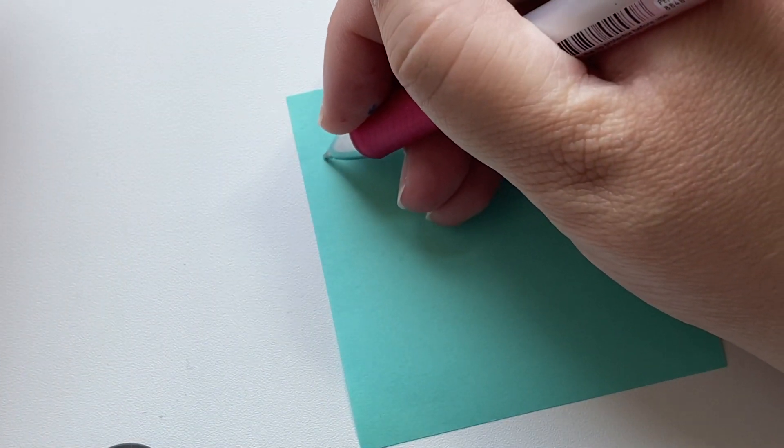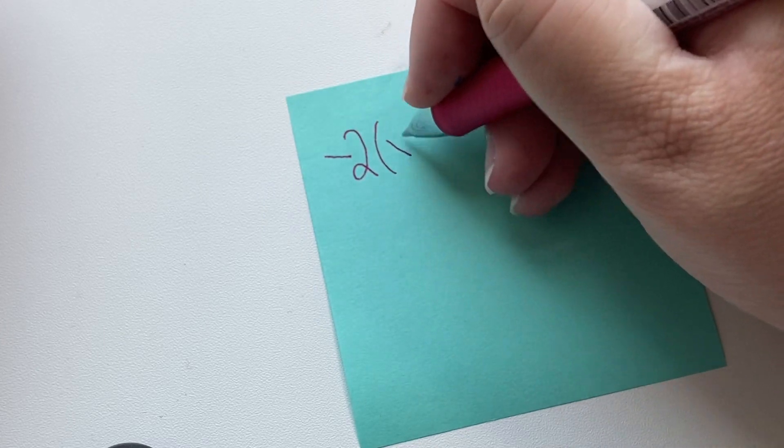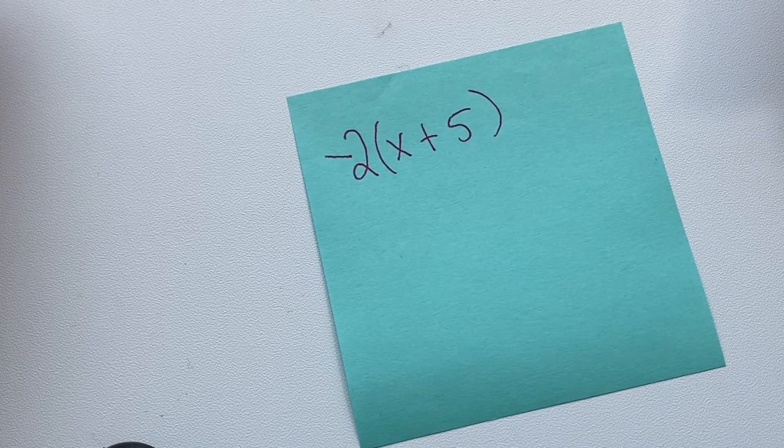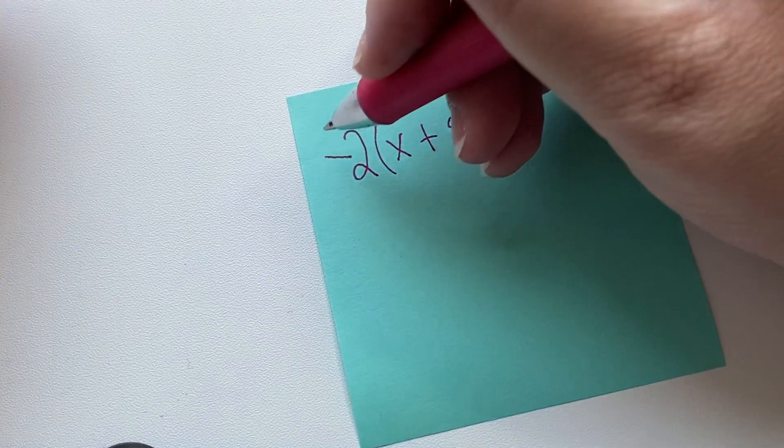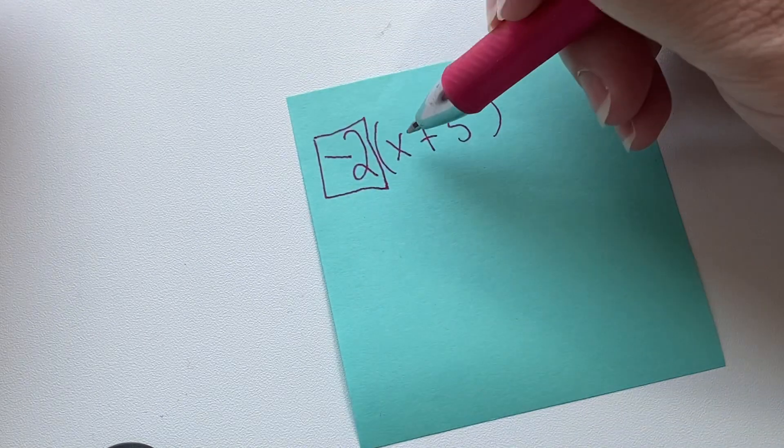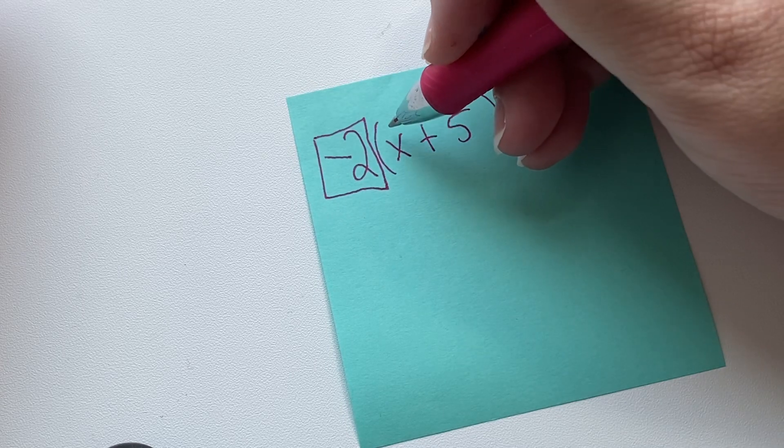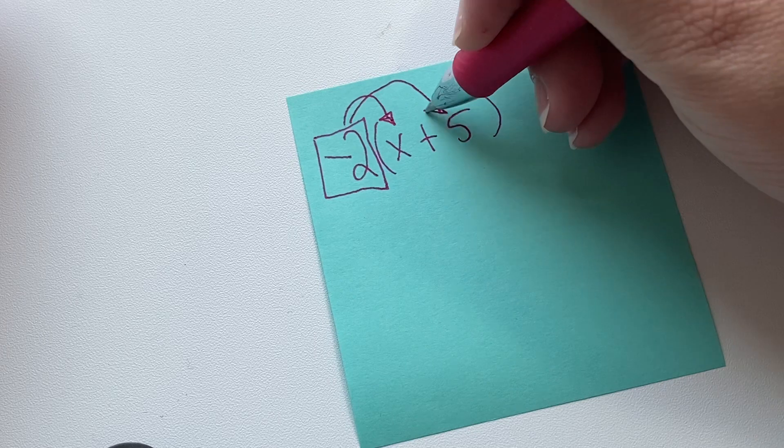So if we have negative two times x plus five, here is one example for us. What we're going to do here is we know that both inside terms have to be multiplied by a negative. So negative two times x, negative two times five.